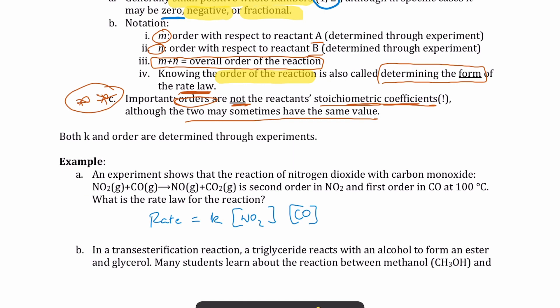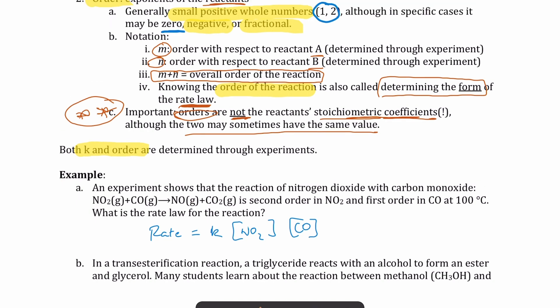So another key information is to understand that both the K value, the rate constant, and the order have to be determined through experiments. So in other words, you have to collect data, just like what we talked about in a prior lecture. You get those concentration versus time data, and then from that data to get your K and your order.